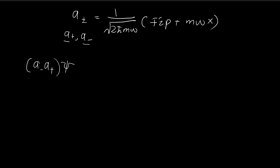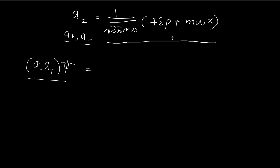We want to find an expression for this and define it with the symbols we have. The way Griffiths derives his result is to treat this like a polynomial and start doing multiplication — but I think that's conceptually inaccurate. I prefer to put in a dummy function to see how the operator changes it, because if you treat this like a polynomial you might accidentally make mistakes. It's much safer to actually put in a function.